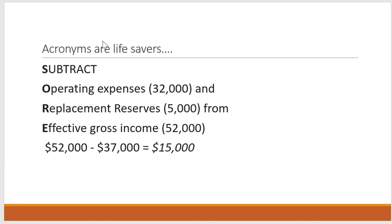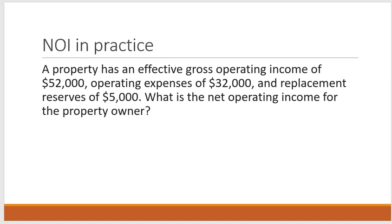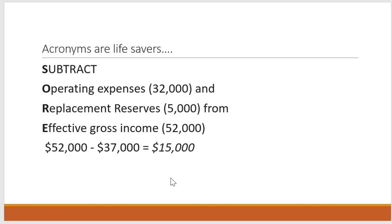Acronyms are lifesavers. You've already written down SOAR. Subtract your operating expenses, which is $32,000, and replacement reserves, which is $5,000, from your effective gross income, which is $52,000. So $52,000 minus $37,000 — which is the sum of our expenses and reserves — equals $15,000. The net operating income for the property owner is $15,000 after using our SOAR equation.